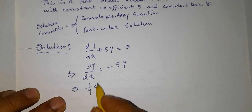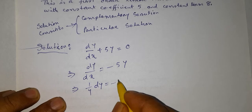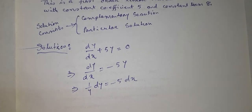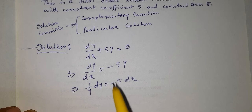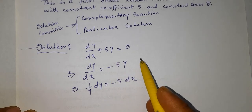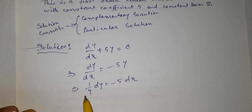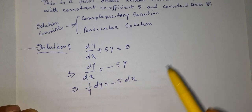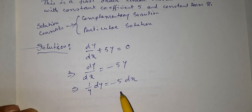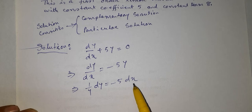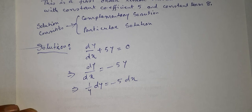We rearrange to get 1/y dy equal to minus 5 dx. We take the 5y term to the right hand side, then take y to the left hand side to write 1/y, and take dx to the right hand side, so we get 1/y dy equal to minus 5 dx.